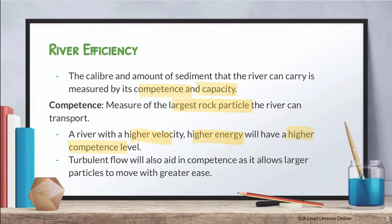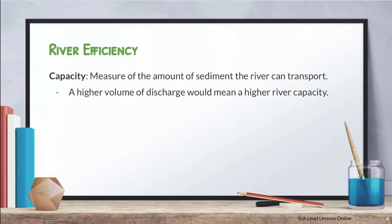A river of high velocity and high energy will definitely have a higher competence level. Turbulent flow also aids competence as it allows larger particles to move with greater ease. Turbulent flow usually occurs at the upper course — think of it like a whirlwind, with a lot of eddies and bubbles where velocity is extremely high. High velocity makes it easier for sediments to be transported.